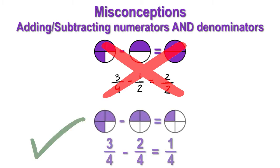In order to add or subtract, a common denominator must be found in order to subtract same sized pieces.